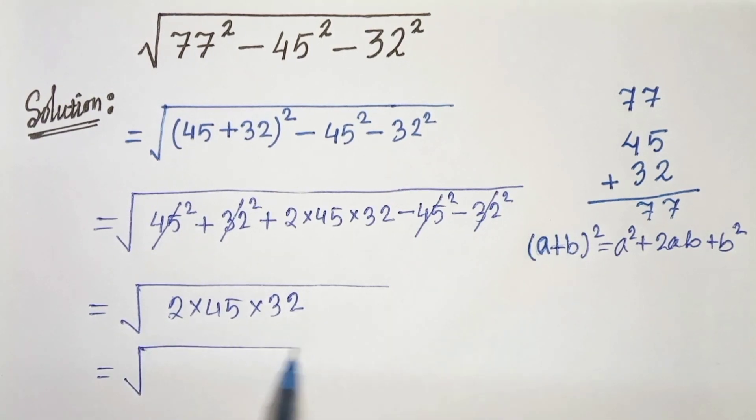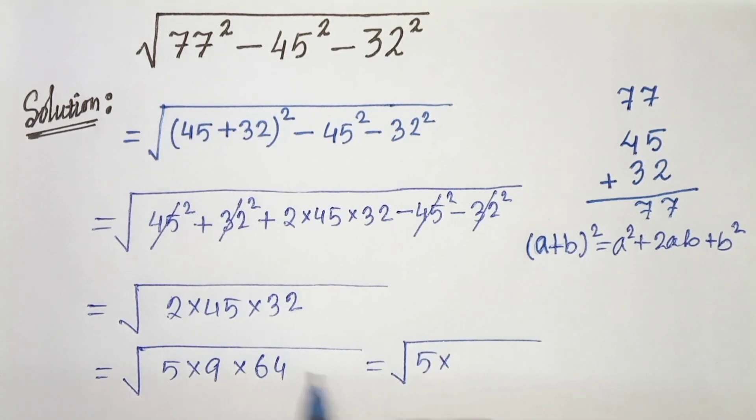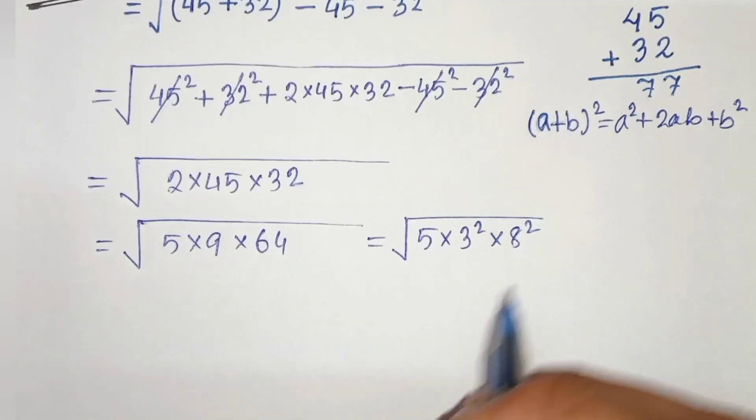In the next step we can write 45 as 5 times 9 as 3 square and 64 as 8 square.